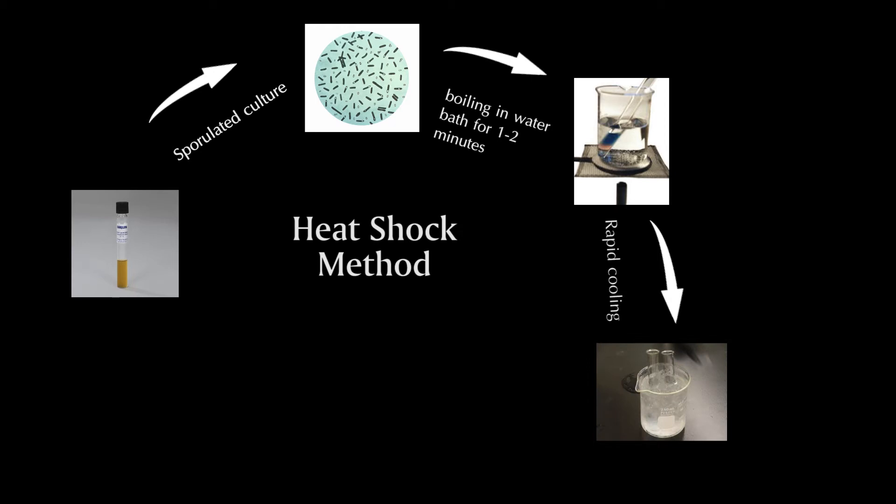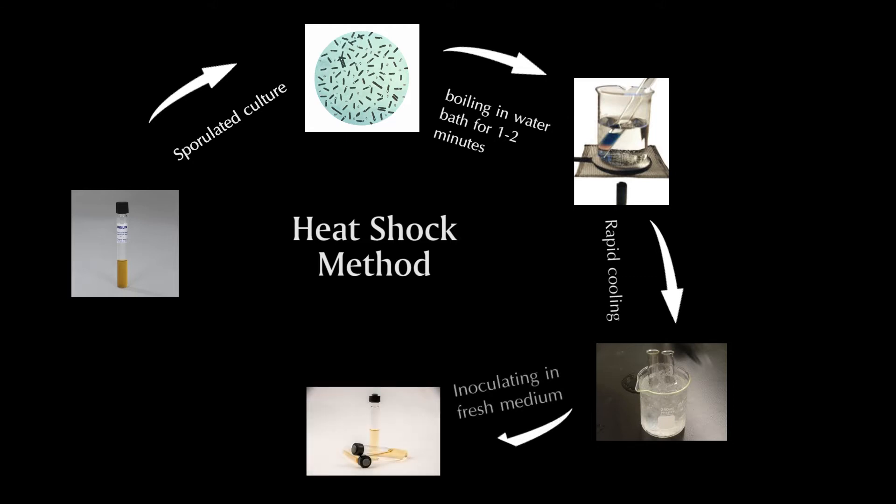This process is performed to remove vegetative cells and heat-labile spores. The survived spores are inoculated in fresh media and incubated at room temperature for few days, which allows the organism to form spores. This spore-related culture is again heat-shocked and this cycle continues. 100 to 150 cycles can be performed to get heat-resistant strain.